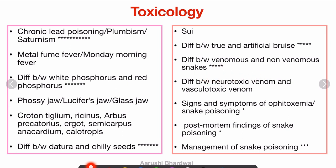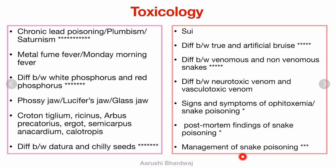The difference between venomous and non-venomous snakes is important — please see the images, you will understand it better. The difference between neurotoxic venom and vasculotoxic venom — which is in viper, which is in cobra or krait — signs and symptoms of snake poisoning, post-mortem findings of snake poisoning, and management of snake poisoning are all things you should know.